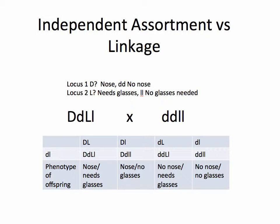But if the Mr. Potato Head is little d, little d — that is, homozygous recessive — he or she is not going to have a nose. And let's consider that there's a second locus which relates to the presence or absence of glasses. If your Mr. Potato Head is either homozygous dominant or heterozygous at this locus, that Mr. Potato Head needs glasses. If homozygous recessive, that Mr. Potato Head does not need glasses.